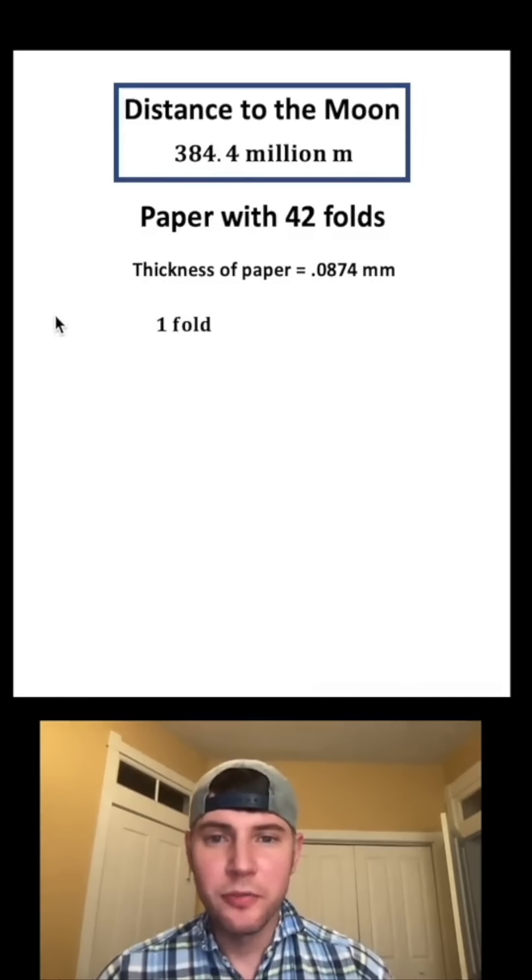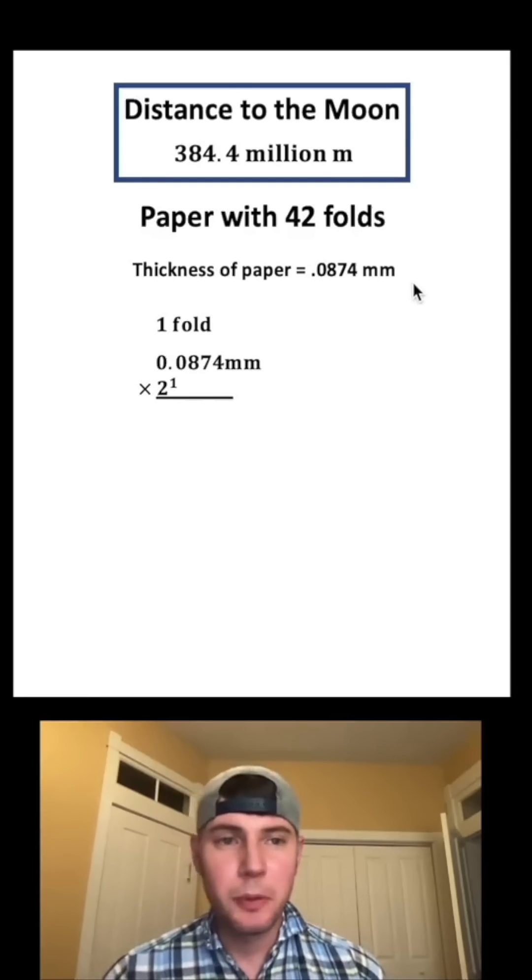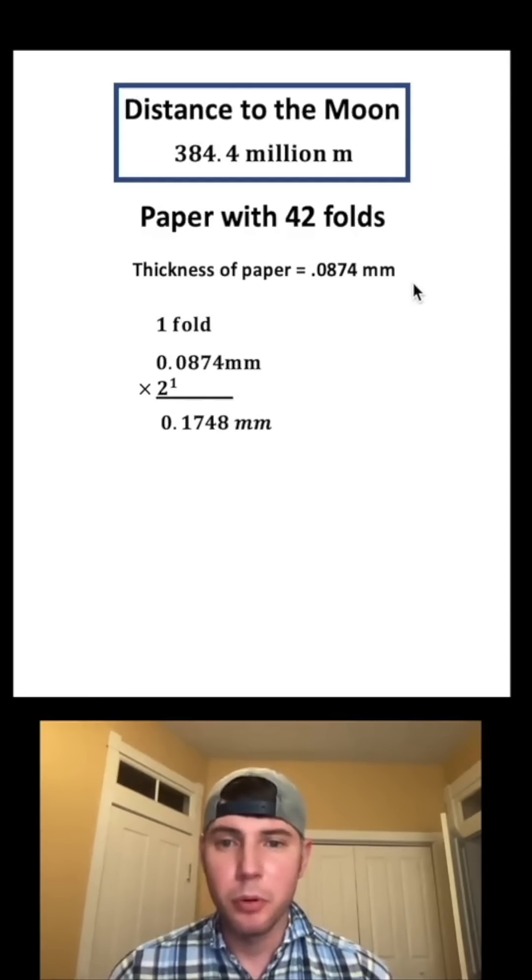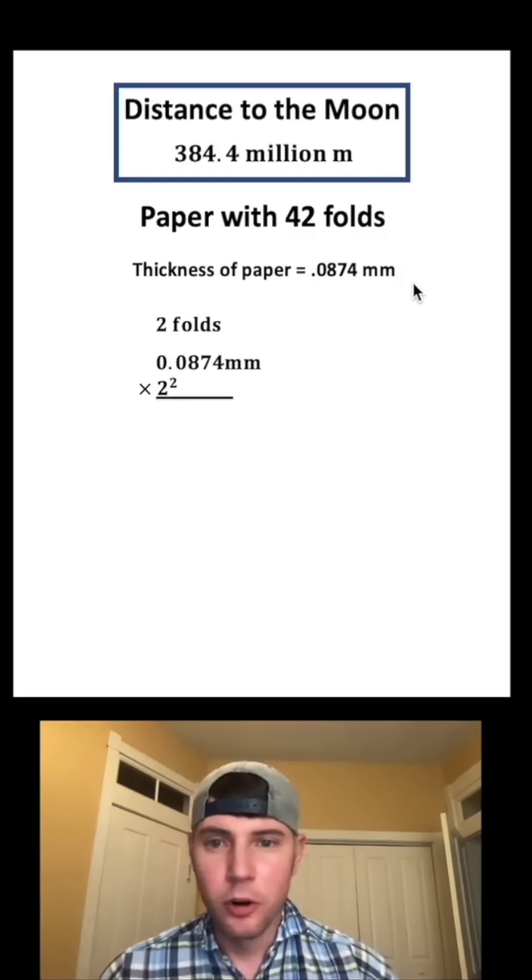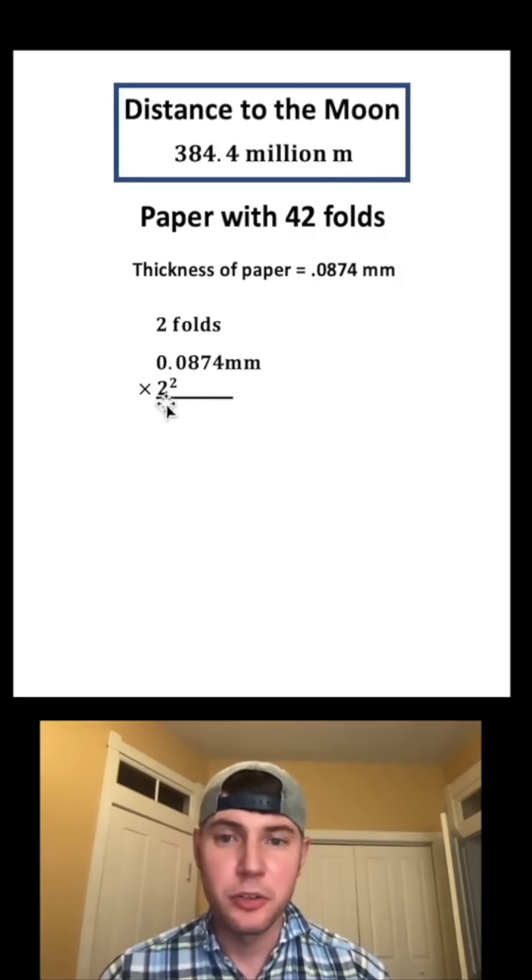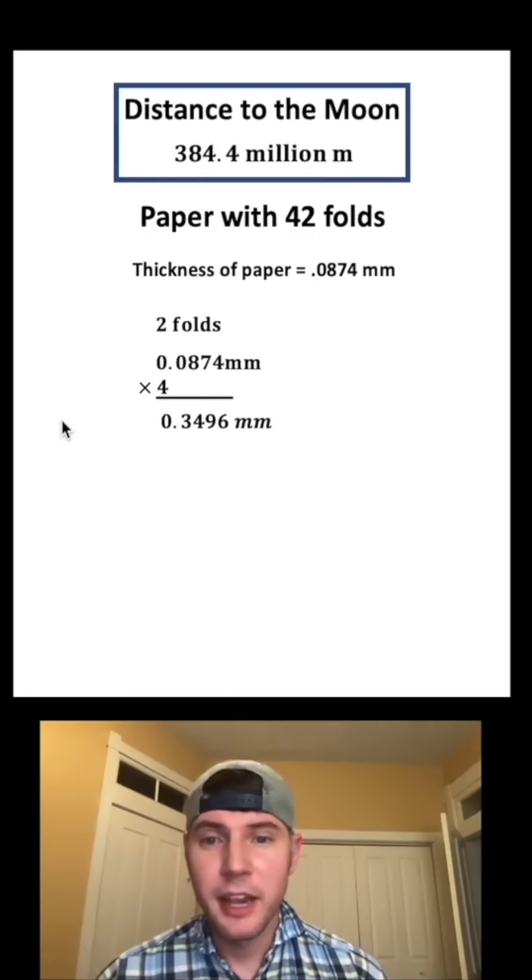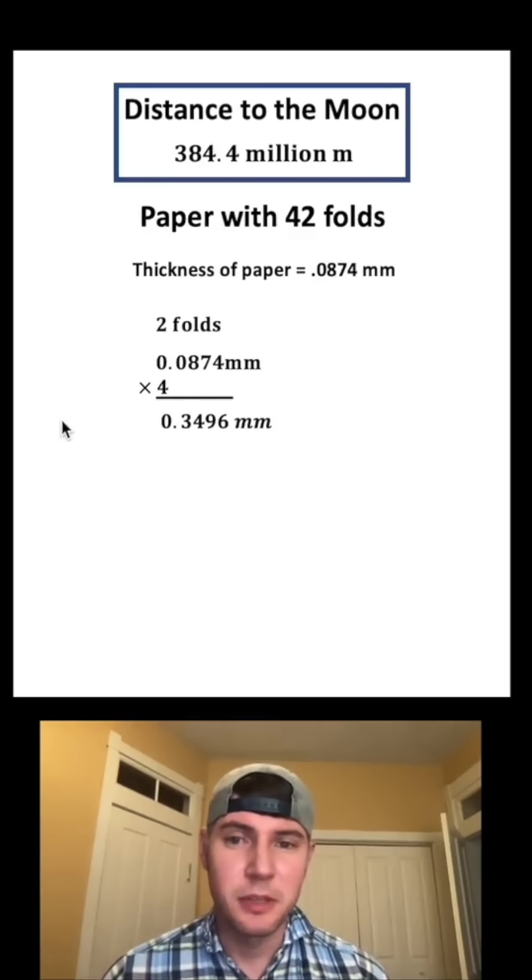Now let's look at one fold. We would take the thickness of our piece of paper, multiply it by 2 to the 1, and we would get 0.1748 millimeters. Or if we did two folds, we would multiply it by 2 squared, which would be 4, and that would give us 0.3496 millimeters.